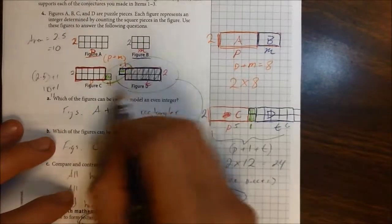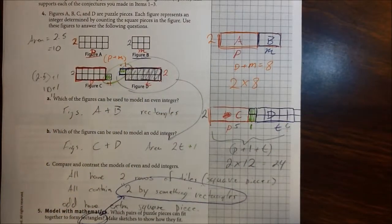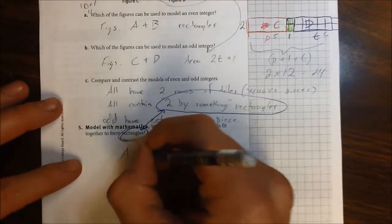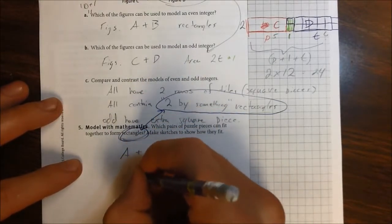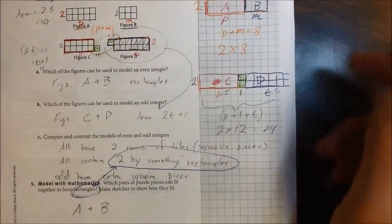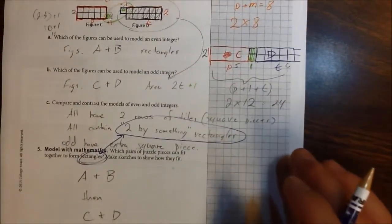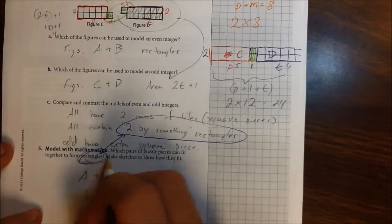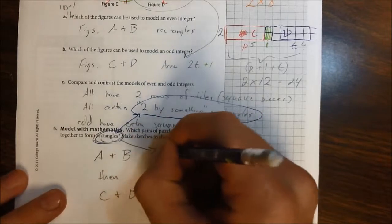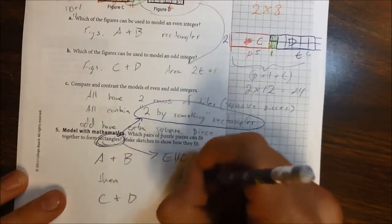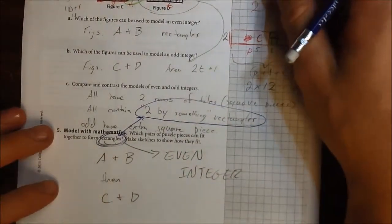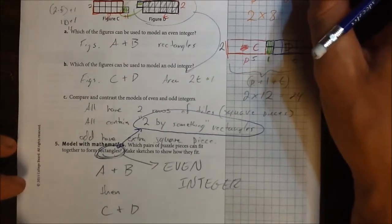So which pairs of puzzle pieces can fit together to form rectangles? That would be A and B, then C and D. These drawings show how and why they fit together. We need to recognize that if we do form these rectangles with no extras, that's an even integer — it's an even integer if it's a rectangle with nothing else, no extra tiles.